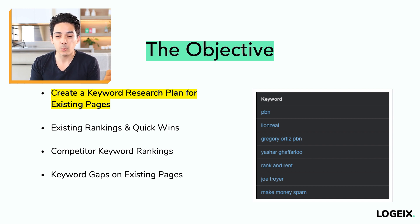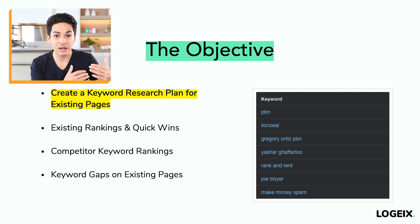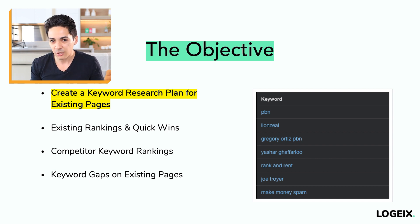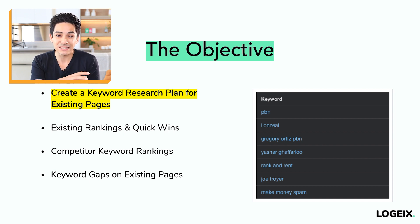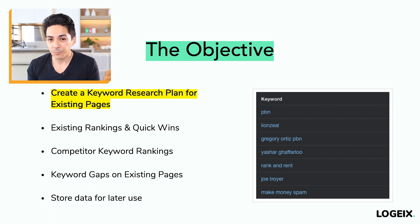Another great thing is to look at keyword gaps on existing pages. Look at what keywords your competitors are ranking for versus what you're ranking for. If you already have a page about a topic but aren't ranking for a specific keyword, it probably means you don't mention that keyword on that page. By identifying that keyword gap, you can add content about it and start ranking for that additional keyword on your existing page. Once complete, store this data for later use in your link building and on-page SEO process.